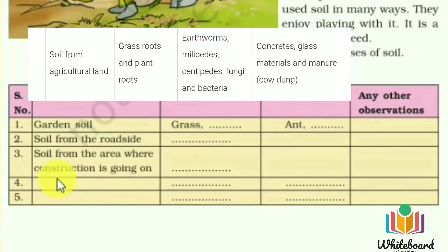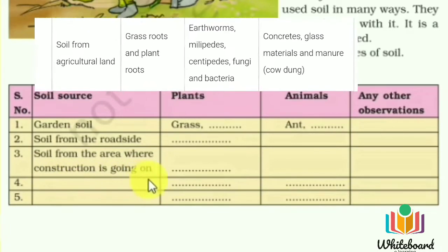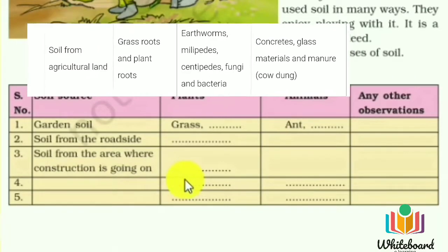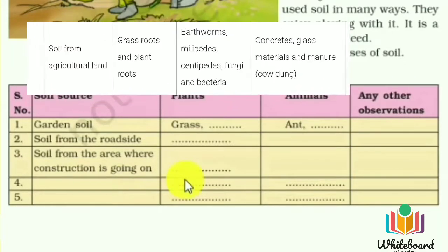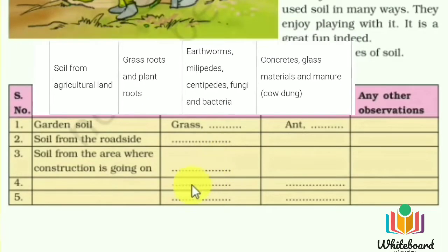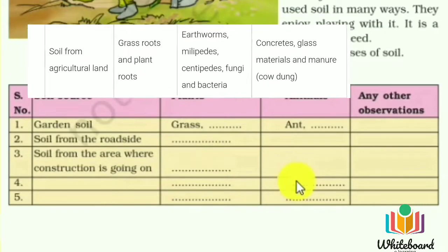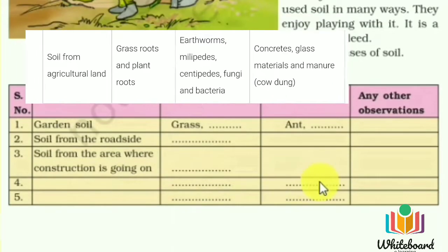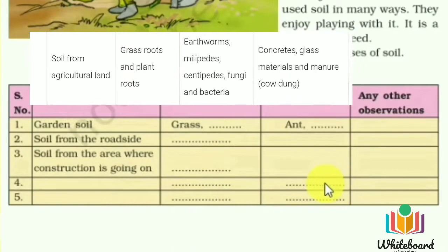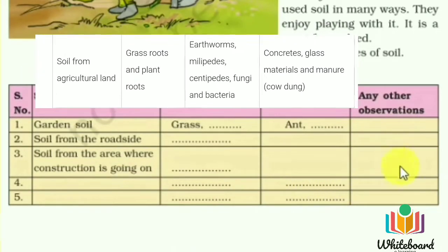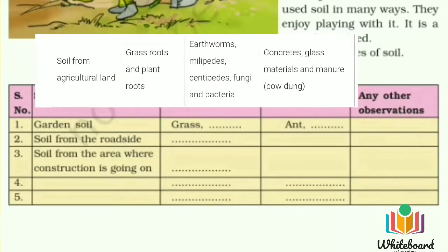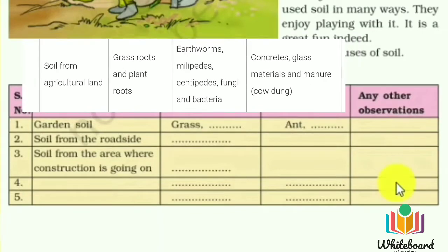Number 4 — Soil from agricultural land: plant parts include grass roots, plant roots, and fallen leaves. Animal parts include earthworms, millipedes, centipedes, fungi, and bacteria. Other observations: concrete, glass materials, and manure — probably cow dung — are also present.